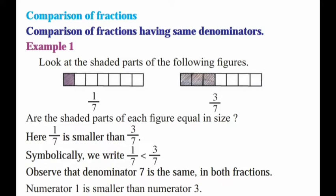Observe that the denominator 7 is the same in both fractions. The numerator 1 is smaller than numerator 3. When the denominator is the same, the fraction with the smaller numerator is less than the fraction with the greater numerator.